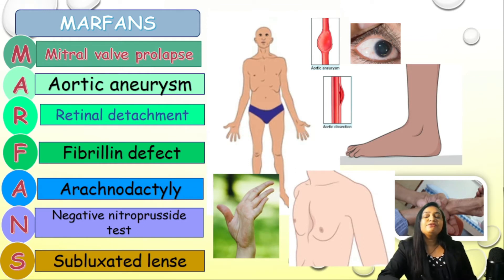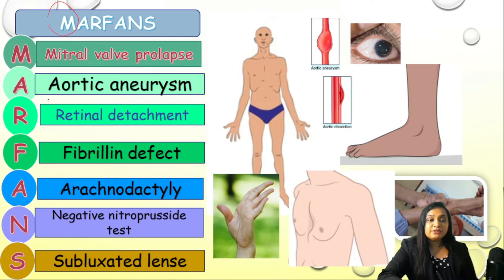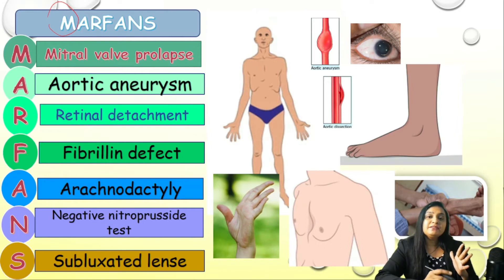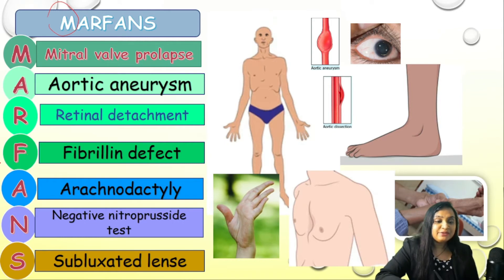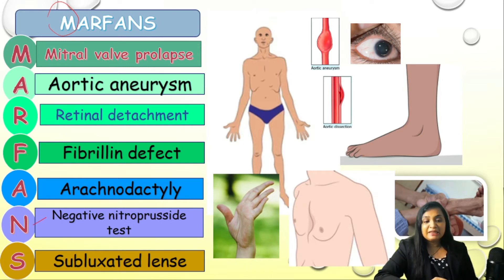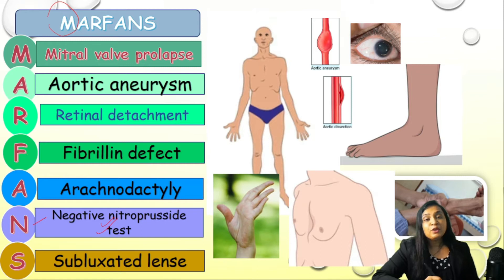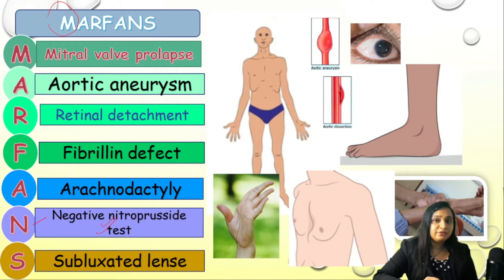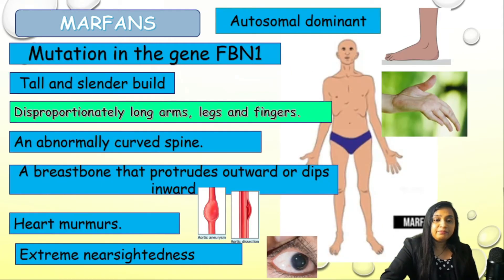For Marfan syndrome, the mnemonic is MARFANS itself. M stands for mitral valve prolapse, A for aortic aneurysm, R for retinal detachment, F for fibrillin defect, A for arachnodactyly — long slender fingers like a spider. N stands for negative nitroprusside test. This is very important: the nitroprusside urine test differentiates Marfan syndrome from homocystinuria, because in homocystinuria the urine test turns red (positive), while in Marfan it remains the same color. S stands for subluxation of the lens.